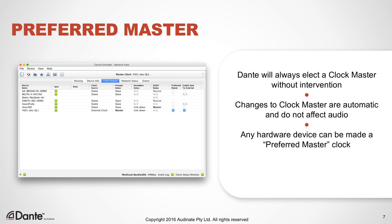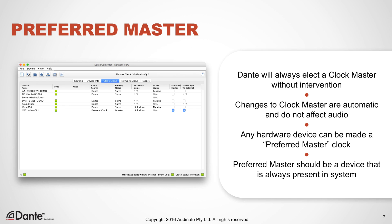Sometimes users prefer to have a single device always elected clock master using the Preferred Master checkbox. If this option is taken, it makes sense to choose a device that is always in the system — for example, a mixing console is always present and necessary for a live show, so it makes sense to make it the preferred master. If a preferred master goes offline, Dante will always elect a new clock master regardless. Note that Dante Virtual Sound Card cannot provide a clock, while Dante VIA can — but hardware clocks are always preferred in elections.